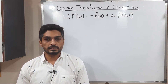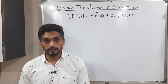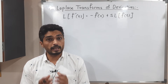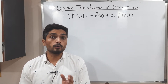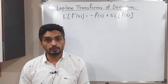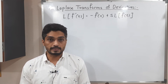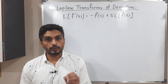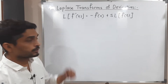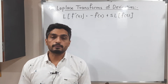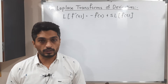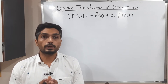Let us discuss the Laplace transform of derivatives. When you have a derivative of any function and we have to find its Laplace transform, we will discuss the proof of this result before doing examples. It's very simple and quite interesting. We are going to prove that L of F dash of T is equal to minus F of 0 plus S into Laplace of F of T.